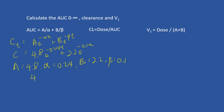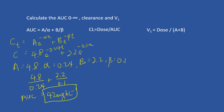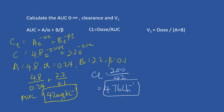Using these values: 4.8 divided by 0.24 plus 2.2 divided by 0.1 gives an AUC of 42. For clearance: dose divided by AUC equals 200 divided by 42, giving clearance of 4.76 liters per hour. For V1: dose 200 divided by (A + B), which is 4.8 plus 2.2 equals 7, so 200 divided by 7 gives a volume of 28.6 liters.